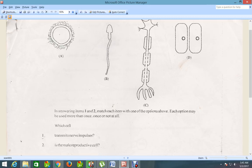So the first question is saying which cell transmits nerve impulses? And as you look at these cells now, C is the correct answer because this one basically looks like a neuron.